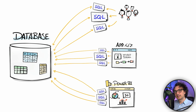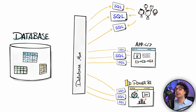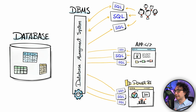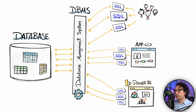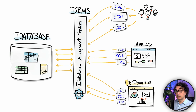We have a lot of interactions with the database from people, applications, and tools — many things are generating SQL and interacting with the database. But the database is just a container and storage, so we need a software to manage all those requests. That's why we have something called a Database Management System, or DBMS. It is software that can manage all those different requests to our database. It prioritizes which SQL must be executed first and manages security — whether a SQL is even allowed to be executed in the first place.